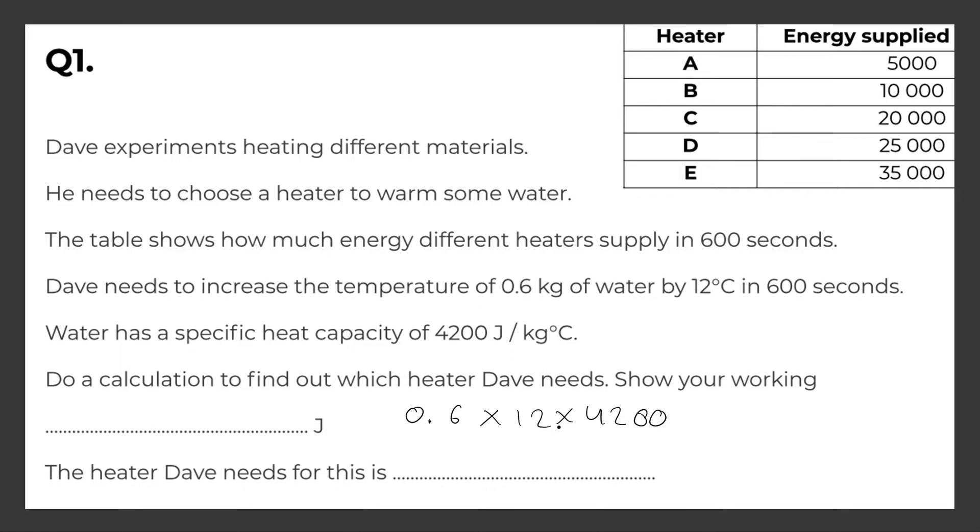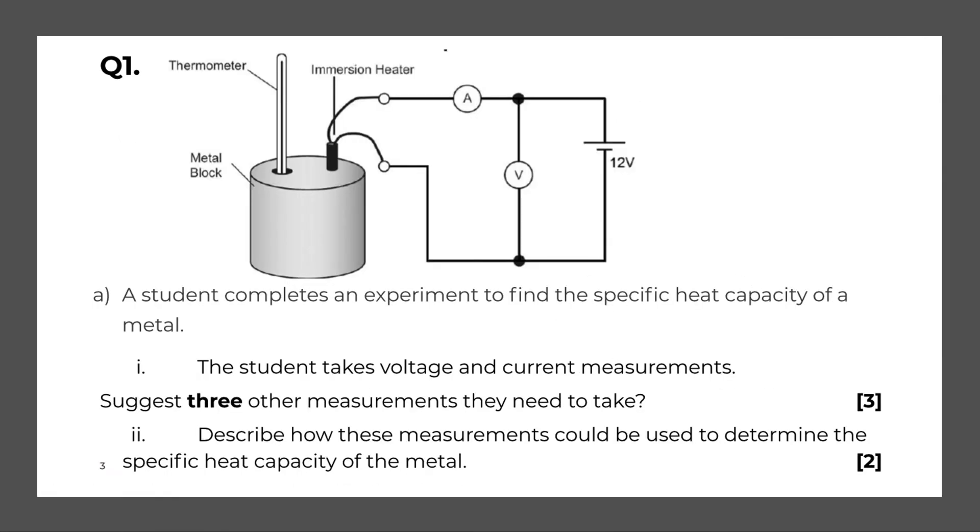Thirty thousand two hundred and forty. So which heater would we need? We would need heater E because this number over here is closest to this number over here.